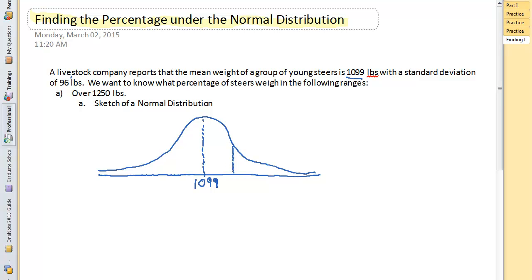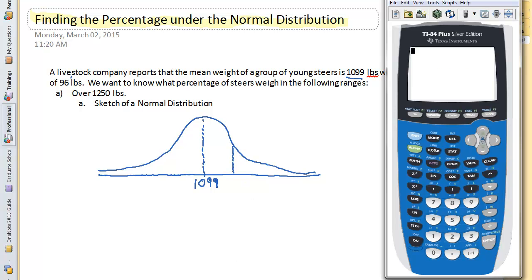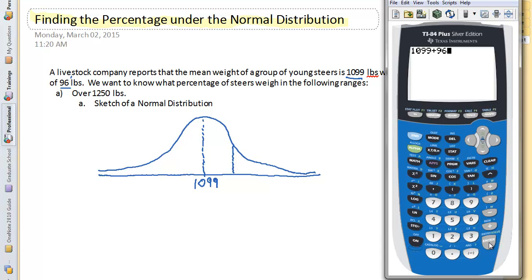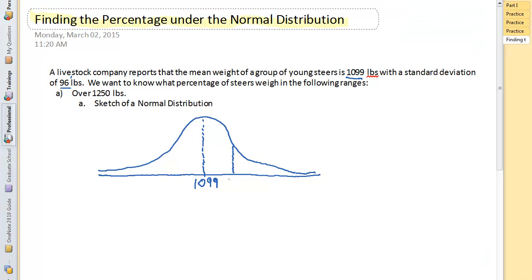To do that, I need my handy dandy calculator. I'm going to take the 1099 and add to it one standard deviation which is 96. So I'm going to add 96 pounds to it and hit enter, and I get 1,195.